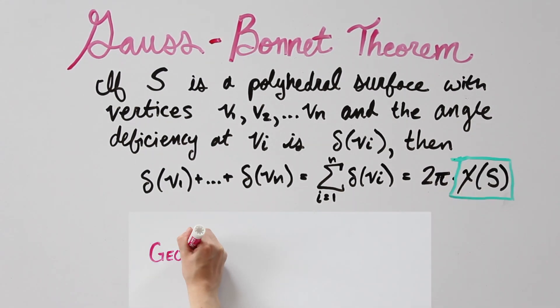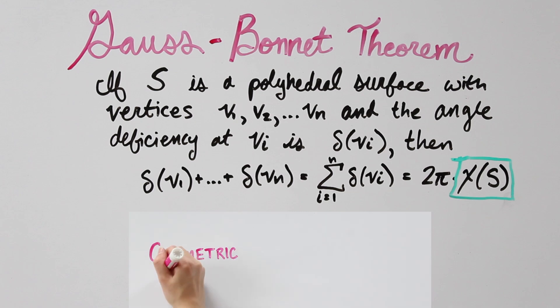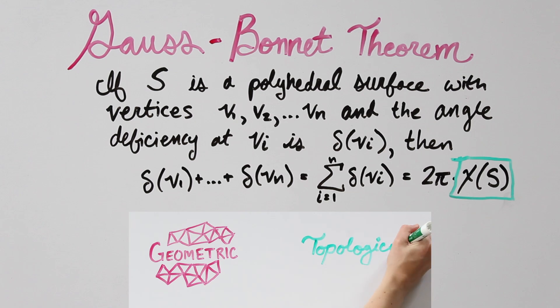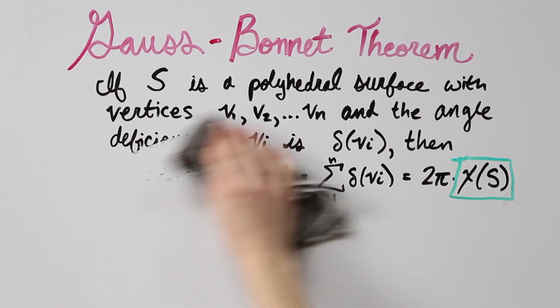The really cool thing about the Gauss-Bonnet theorem is that it draws a connection between the specific geometric properties of a surface and the big picture topological properties. That is, the geometry changes with continuous deformation, but the topology of a surface doesn't. And the Gauss-Bonnet theorem draws a connection between these two different types of properties.